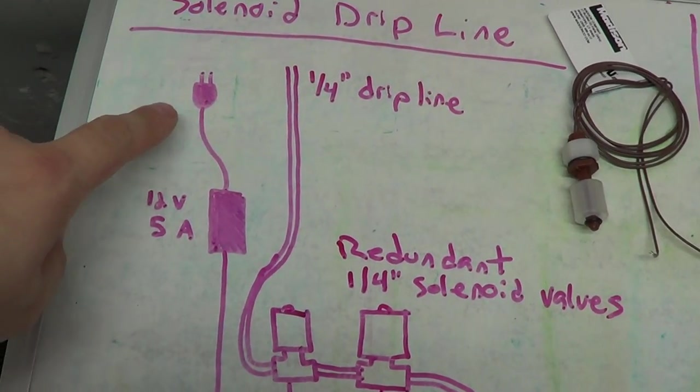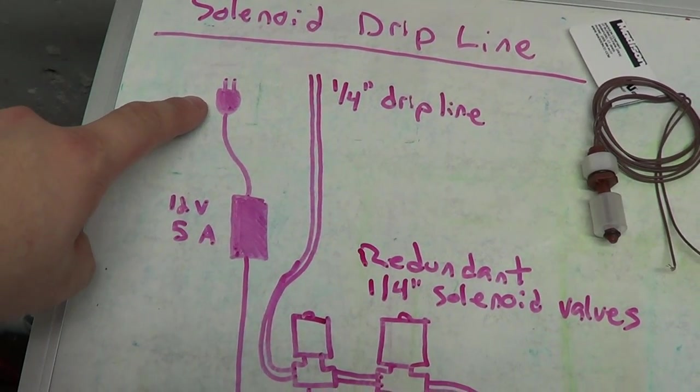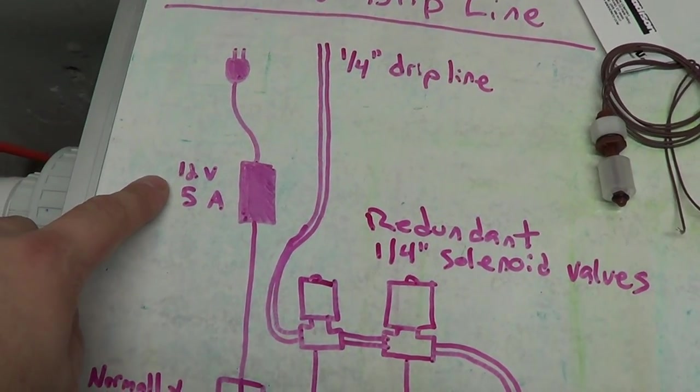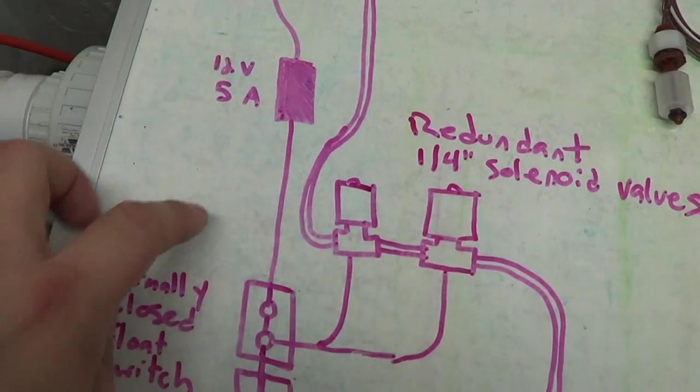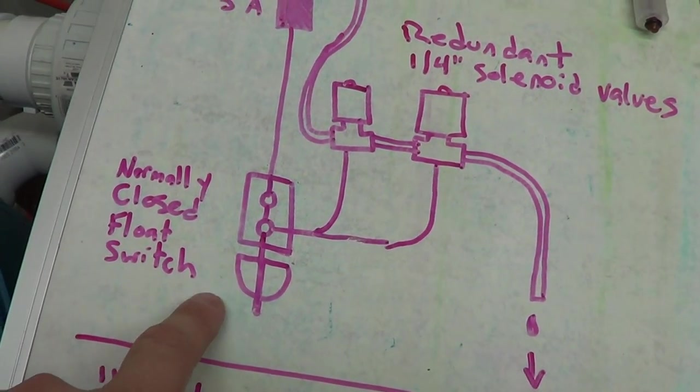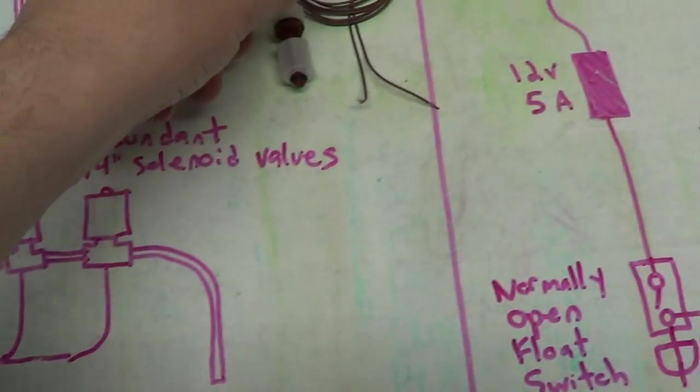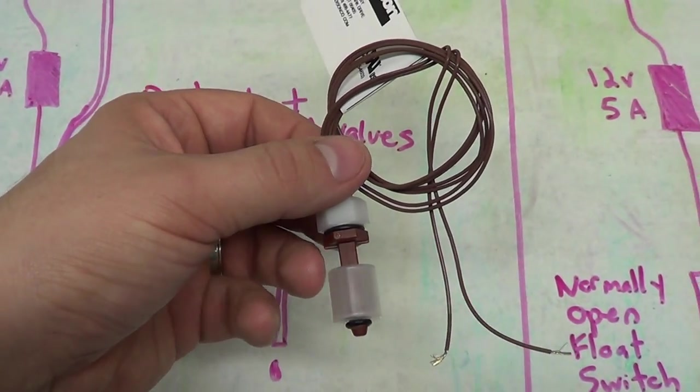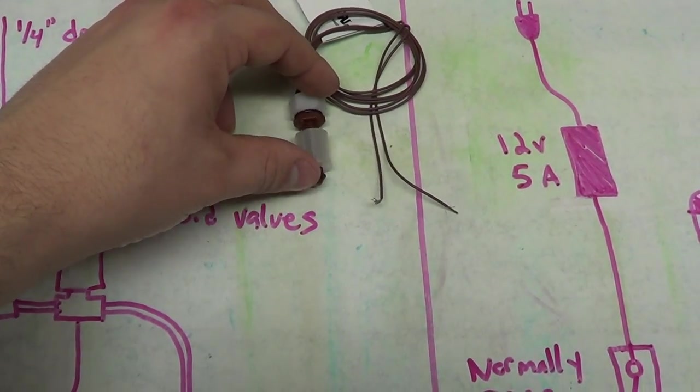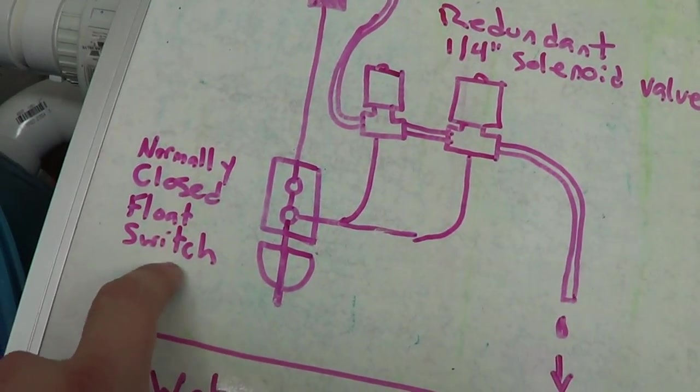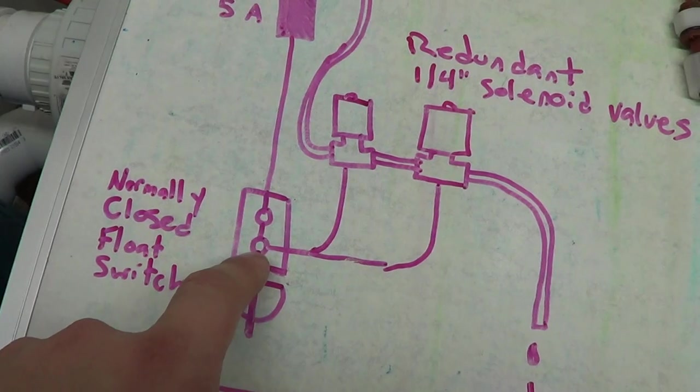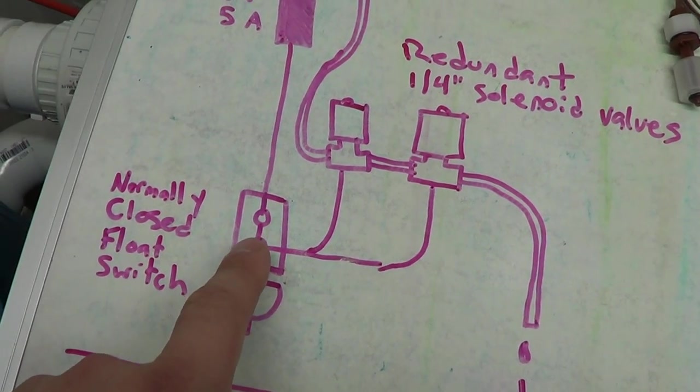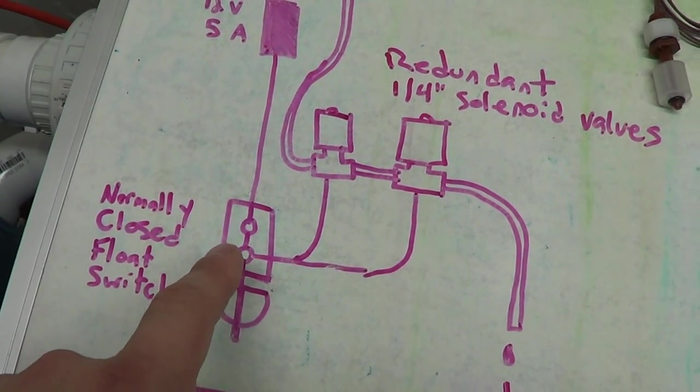What we're going to do first is start with our wall power, an electrical socket, and we're going to use a 12 volt 5 amp power adapter. And the line from that is going to go into a normally closed float switch, something like this, like a water level fluid level switch. Doesn't have to be very expensive as long as that float goes up and down. It's normally closed, which means that circuit is normally connected. The circuit will be interrupted when the float switch comes up and opens the circuit.